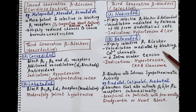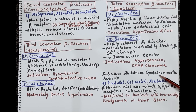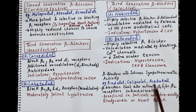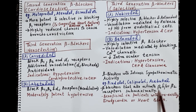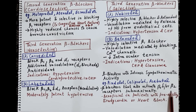Some beta blockers possess intrinsic sympathomimetic activity, meaning they are capable of activating beta 1 and/or beta 2 receptors sub-maximally. Examples are pindolol, acebutolol, and celiprolol. These drugs, apart from blocking beta receptors, also activate beta 1 and/or beta 2 receptors sub-maximally. Drugs with intrinsic sympathomimetic activity are found to be beneficial in patients with pre-existing bradycardia or heart block.